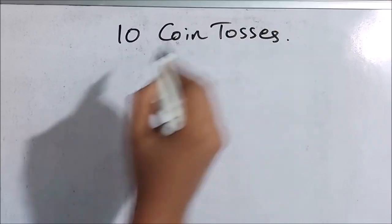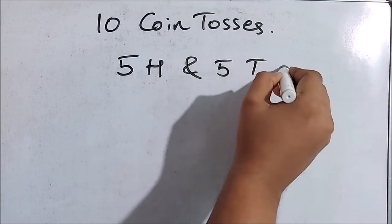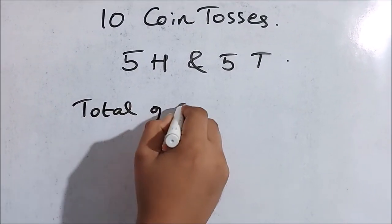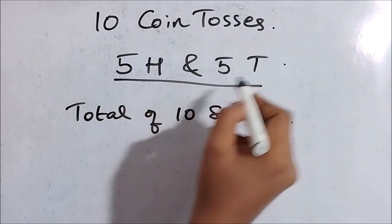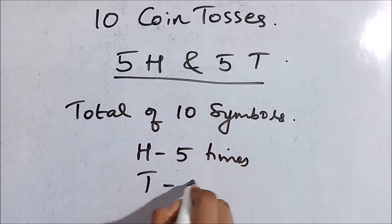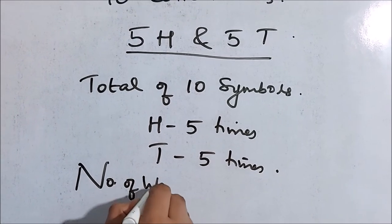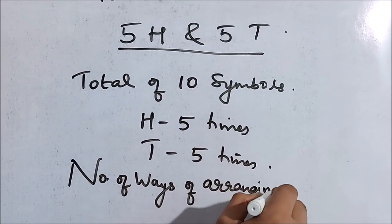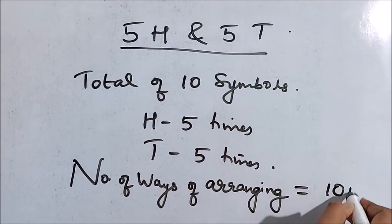In a total of 10 coin tosses, 5 H and 5 T should appear. Each toss outcome is a symbol H or T, so there will be 10 symbols where H must appear 5 times and T must appear 5 times. How many ways can we arrange that? That number of ways of arranging is the number of favorable outcomes.